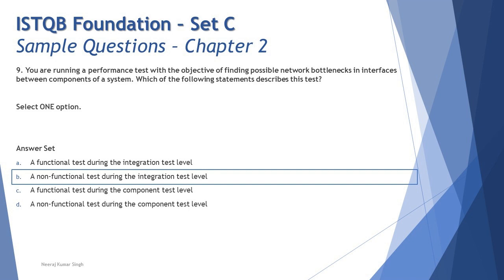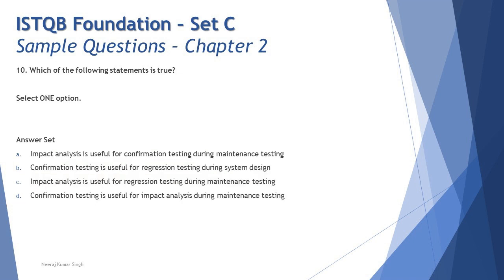Question number 10: Which of the following statements is true? There is nothing specific in the question — just look at the options. Option A: 'Impact analysis is useful for confirmation testing during maintenance testing.' Confirmation testing is about retesting to ensure a defect is resolved, whereas maintenance testing relates to updates, upgrades, and migrations — not defect fixes. So A is incorrect.